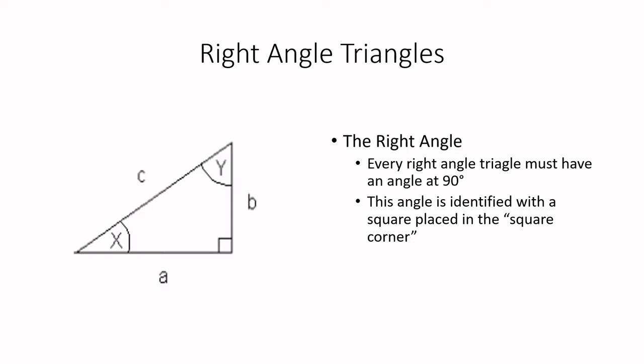It'll always be a 90 degree angle that has to be there in order for us to do all of the rest of the work that we're going to do. So while that's the fundamental starting point, we're going to move on and never come back to it. So this angle is identified by placing the square in the square corner.